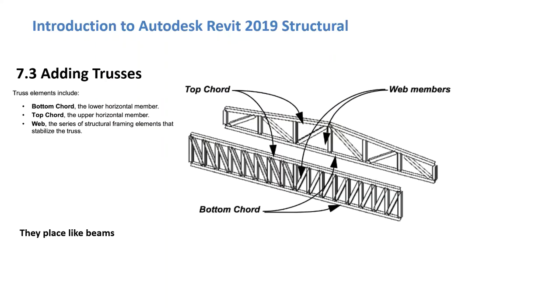Welcome to another tutorial from Chapter 7 in the Revit Structures 2019 Fundamentals book. We're going to talk about adding trusses. If you have a book, this is on page 7-38.